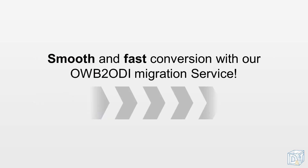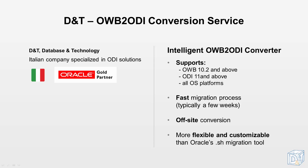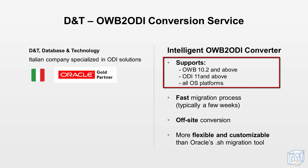To make sure that the conversion process runs smoothly, DNT offers an OWB to ODI conversion service that uses an intelligently automated conversion tool, especially developed by DNT for this purpose. DNT Database and Technology is an Italian company specialized in ODI solutions. The converter combines intelligent automation and customization to guarantee 100% accuracy. All OWB and ODI versions are supported, as well as all operating system platforms.